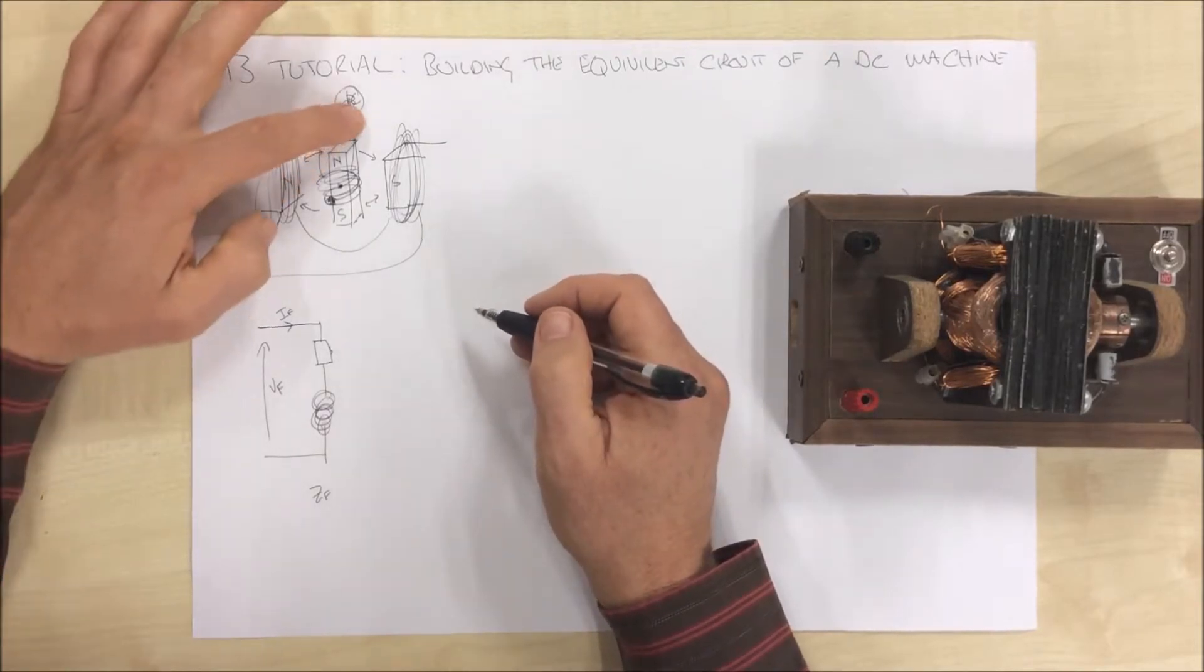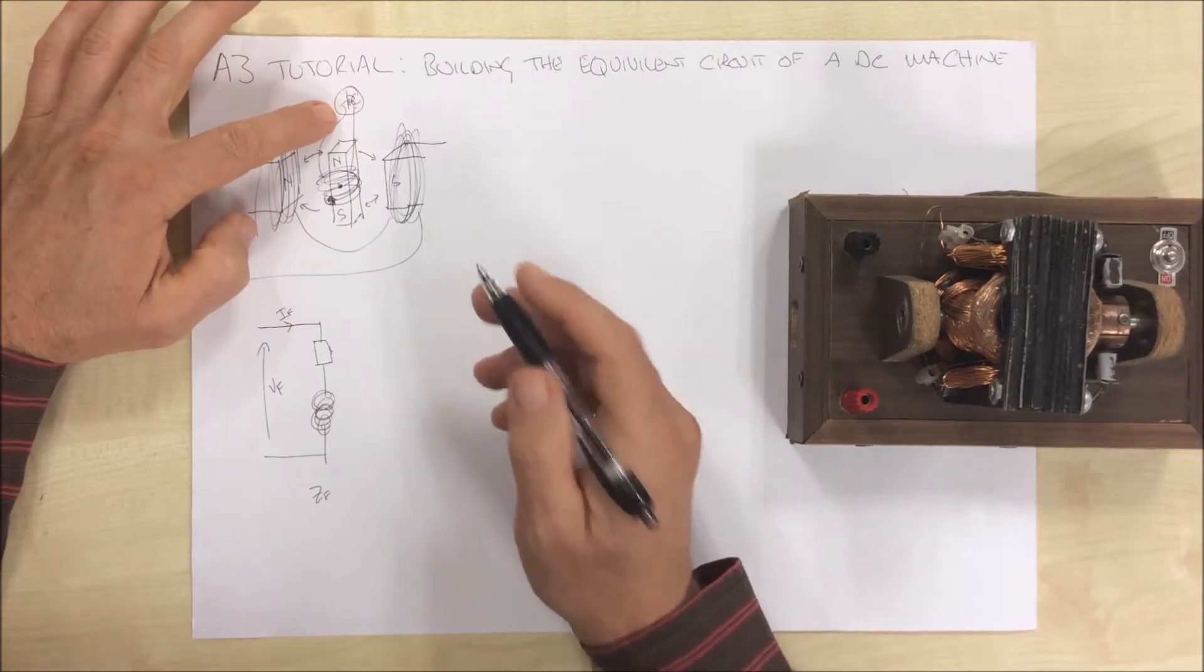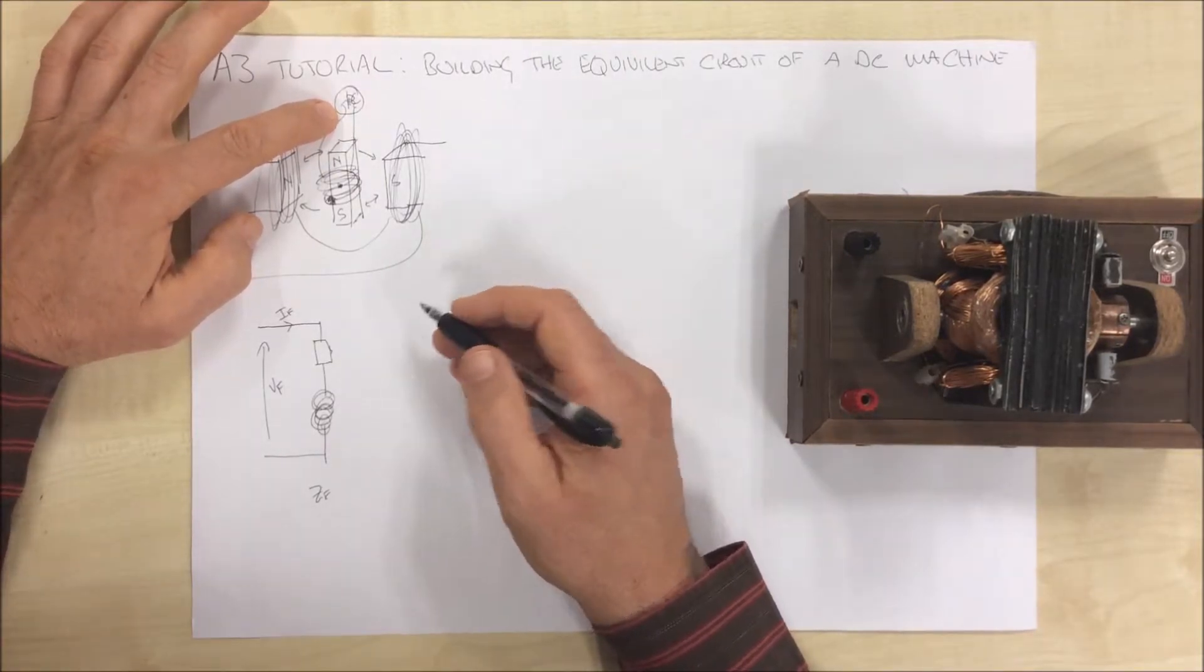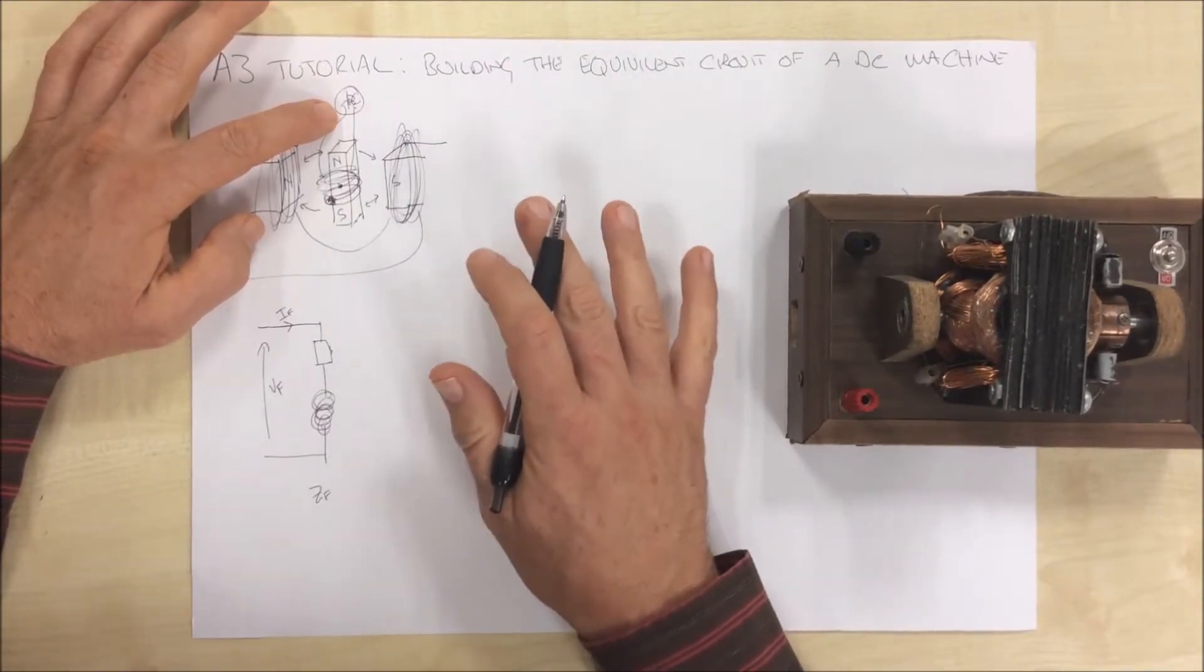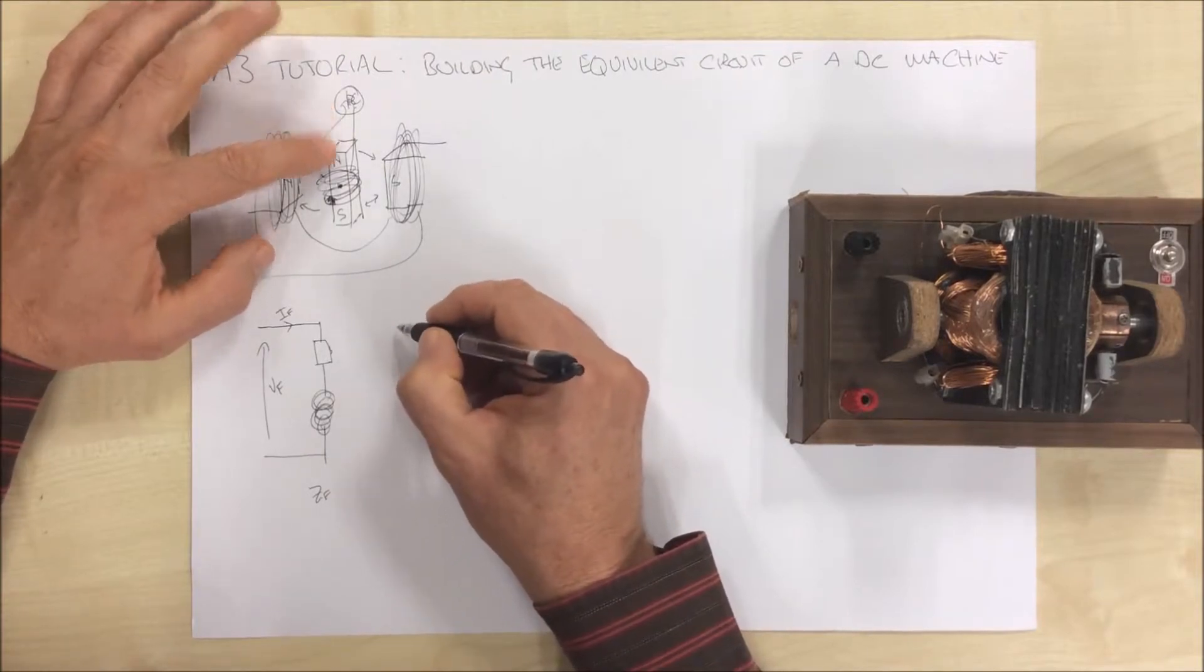Our armature, which in this one here I've got configured from a separate source. And we'll be going on to how we energize these. We can connect them separately excited, or we can connect them in series, or we can connect them in shunt. We'll talk about that in another tutorial. But our armature is also a coil of wire.